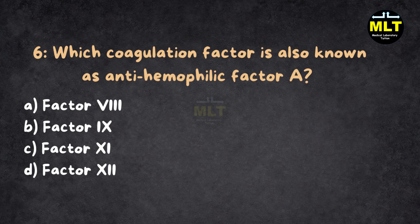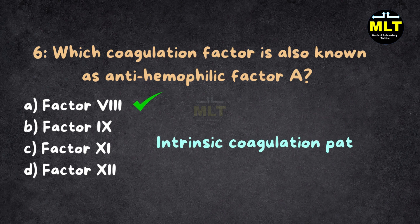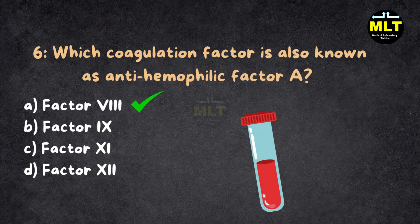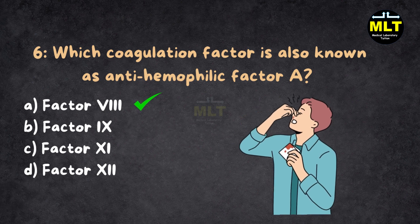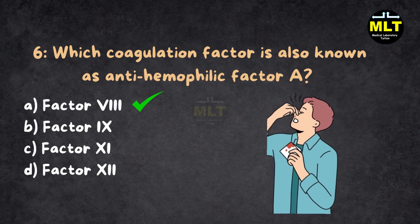Correct answer: A. Factor 8. Explanation: Factor 8 plays a critical role in the intrinsic coagulation pathway. Its deficiency leads to hemophilia A, a hereditary bleeding disorder.